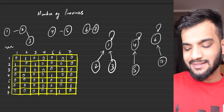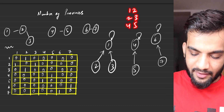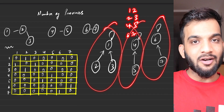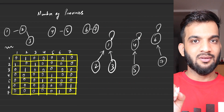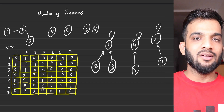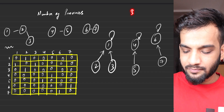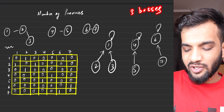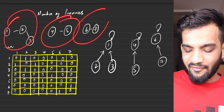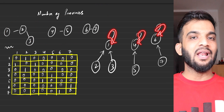So if I talk about the Disjoint Set data structure — if you try to attach 1-2, then 2-3, then 4-5, then 6-7, you will end up with these kinds of structures. And what you need to do is very simple. There will be 3 bosses, or 3 ultimate parents, if there are 3 components, because every component will have a boss.